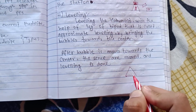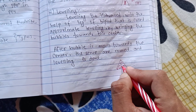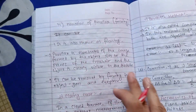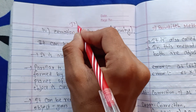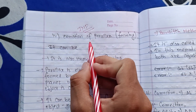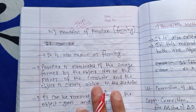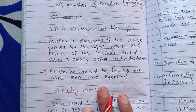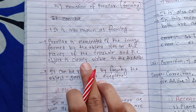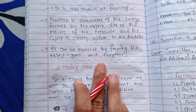When we have three plate bubbles, the bubbles must be centered. The elimination of parallax is an important short note topic. Parallax is eliminated when the image formed by the object lies in the plane of the cross hair and the object is clearly visible.